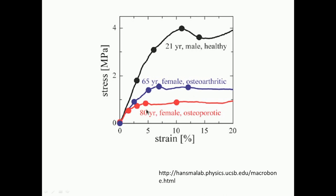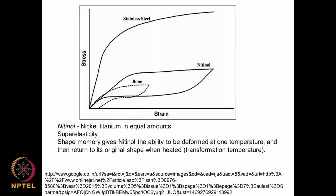An 80-year-old female with osteoarthritis shows the diagram coming down still further. So the stress-strain diagram changes as a function of time and age. For a healthy male, compared to a person with osteoarthritis and an older person with osteoporosis, the Young's modulus comes down further. Looking at stainless steel on the stress-strain diagram, it exhibits a very good elastic region, then goes into the plastic region, with a clear yield strength.